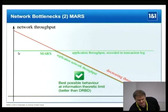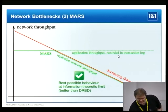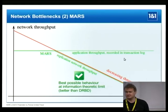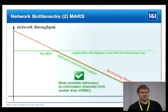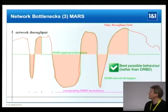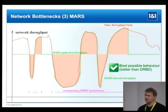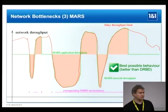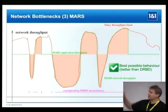In case the network bottleneck doesn't allow replication of all your data, the rest is recorded in the transaction log file. You can see the actual network throughput — the green line — following the red line. The difference between application throughput and network throughput is recorded in the transaction log. This is the best possible behavior from a theoretical viewpoint: it uses the network as best as possible.